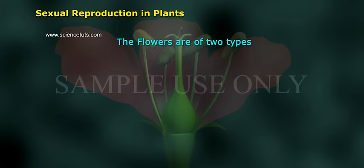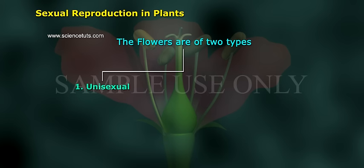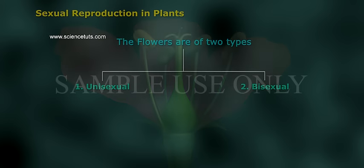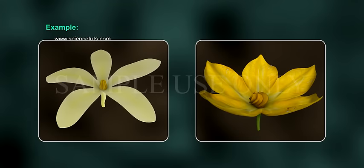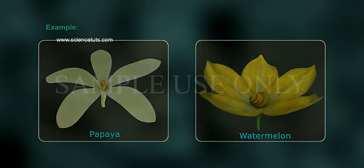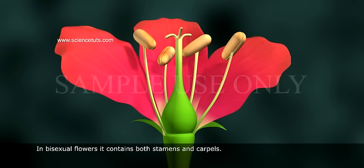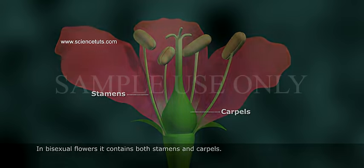The flowers are of two types: 1. Unisexual and 2. Bisexual. In unisexual flowers, it contains either stamens or carpels. Examples include papaya and watermelon. In bisexual flowers, it contains both stamens and carpels.